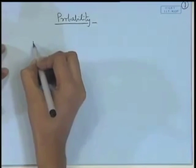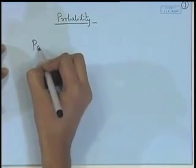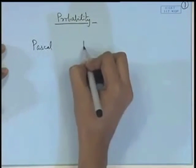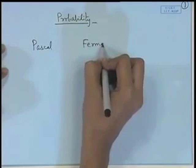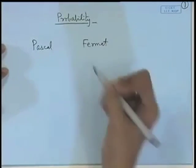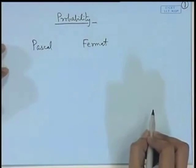They contacted some of the prominent mathematicians of that time, such as Pascal and Fermat, and through the correspondence between these mathematicians, the theory of probability started to develop.